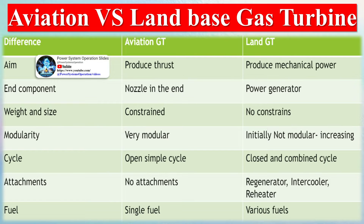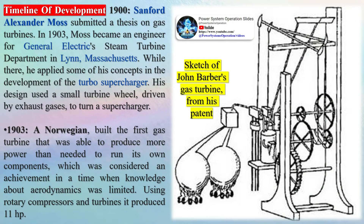Using rotary compressors and turbines it produced 11 horsepower. In 1906, the Armengard Lemely turbine engine in France featured a water-cooled combustion chamber. In 1910, Hallsworth impulse turbine pulse combustion achieved 150 kilowatts (200 horsepower). In 1913, Nikola Tesla patented the Tesla turbine based on the boundary layer effect. In 1920, the practical theory of gas flow through passages was developed, leading to the publication in 1926 of an aerodynamic theory of turbine design by Griffith.